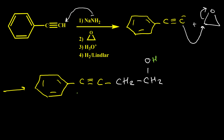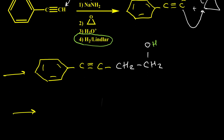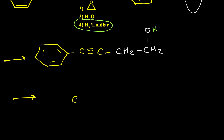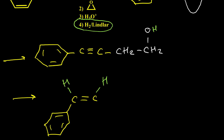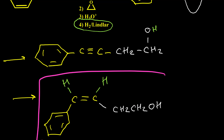We know a triple bond has many reactions. In this example we have reduction of the triple bond by hydrogenation in the presence of Lindlar catalyst. We know Lindlar catalyst reduces alkynes to cis-alkenes. So the product after step four is that the triple bond turns to a double bond as a cis-alkene — both hydrogens on this double bond should be on the same side. On one side we have the benzene ring and on the other side we have CH2 CH2 OH. This is the structure for this four-step reaction.